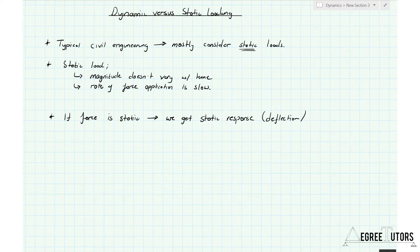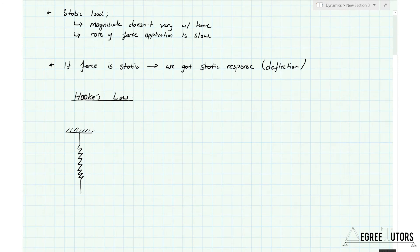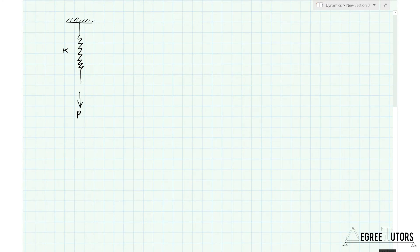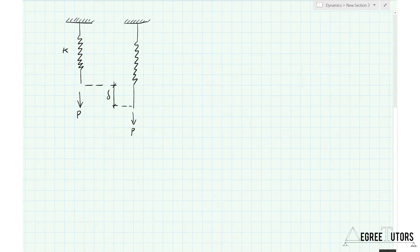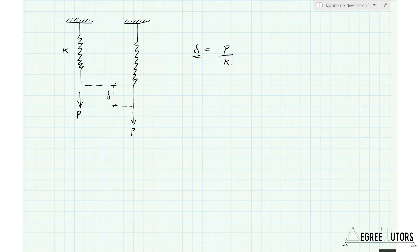Let's think about Hooke's Law, introduced in the context of a spring. We imagine a spring with a spring constant or stiffness k, and we apply a load P to the end of it. The spring extends by an amount delta. Hooke's Law tells us that the deflection delta equals the force divided by the stiffness: δ = P/k. The key point is that the static deflection depends only on the magnitude of the load P and the stiffness of the structure k.